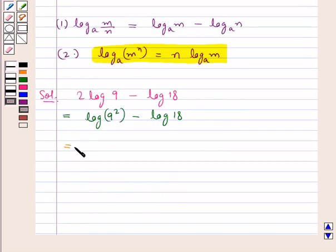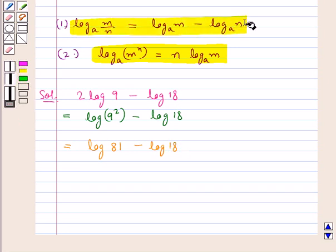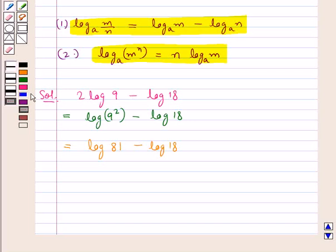Further, we get log 81 minus log 18. Now using the first property, we find that log m to the base a minus log n to the base a is equal to log m upon n to the base a. So this can be written as log 81 upon 18.